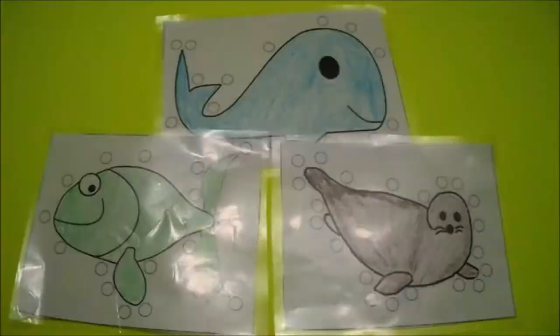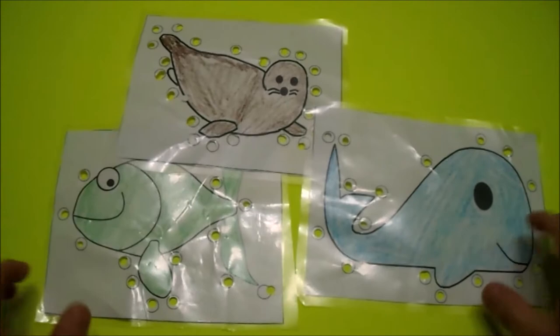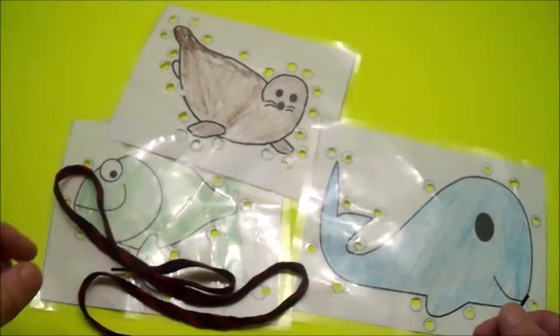Three sea creatures: our fish, our seal, and our whale all have holes. Now it's time for our shoelace that we got as a part of our supply roundup.